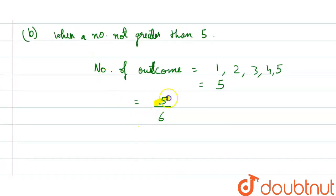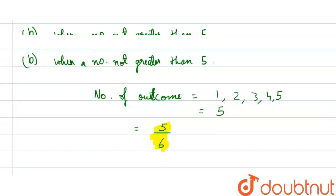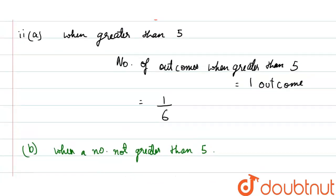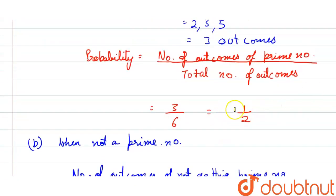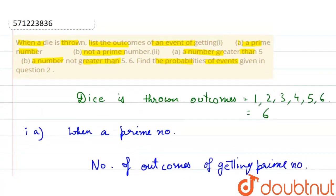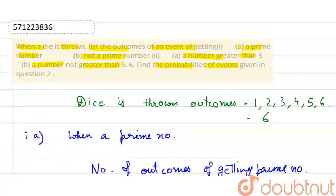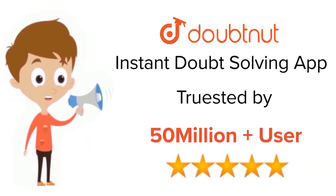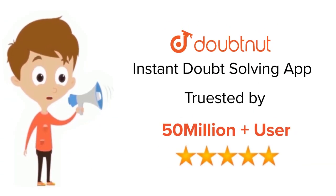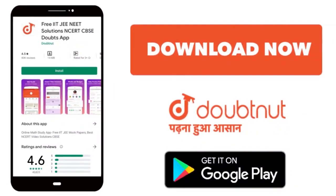So the answers for this question are: for part B 5/6, for part A 1/6, and 1/2 and 1/2 for the first part. These are the answers for this question. Thank you. For class 6 to 12, IIT JEE and NEET level, trusted by more than 5 crore students — download DoubtNet today.